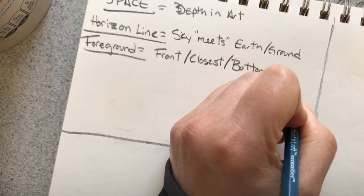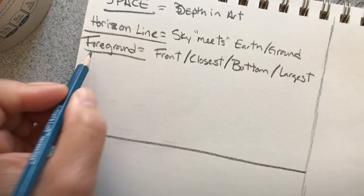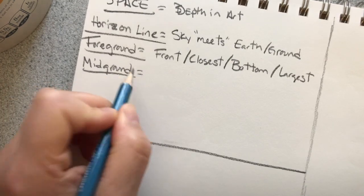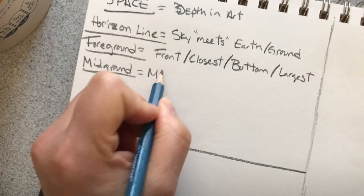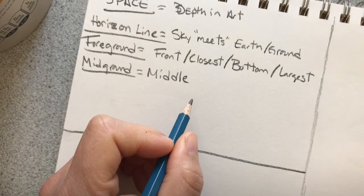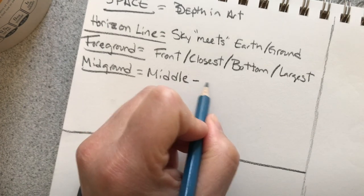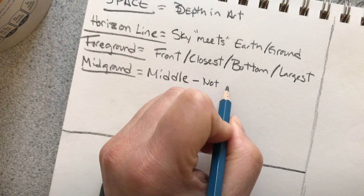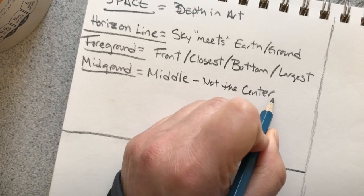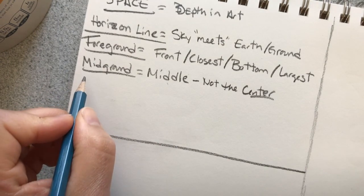Next up is the mid ground. The mid ground is, hopefully you can guess this, it's the stuff in the middle. So it's not the furthest, it's not the closest. It doesn't mean the center, not necessarily. There's a difference between the center and the middle.